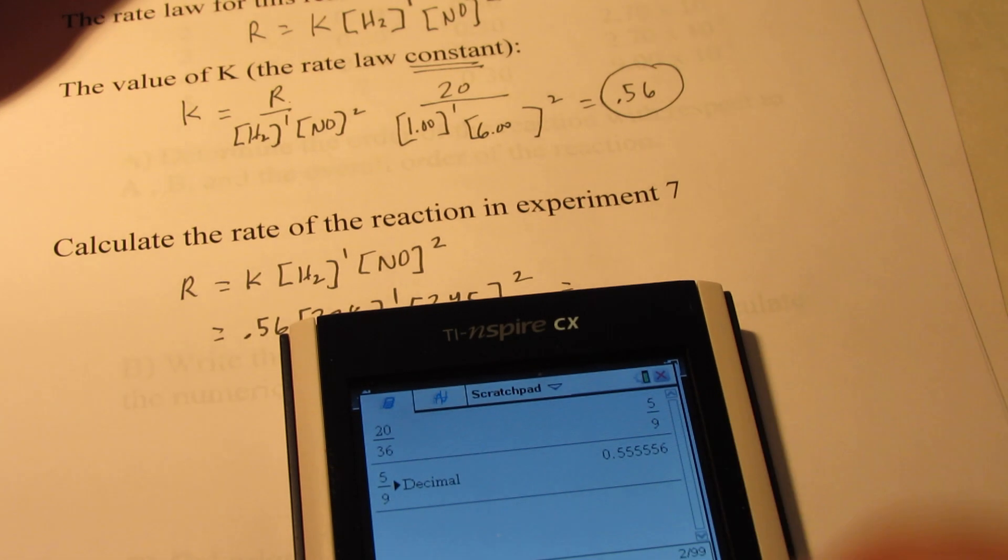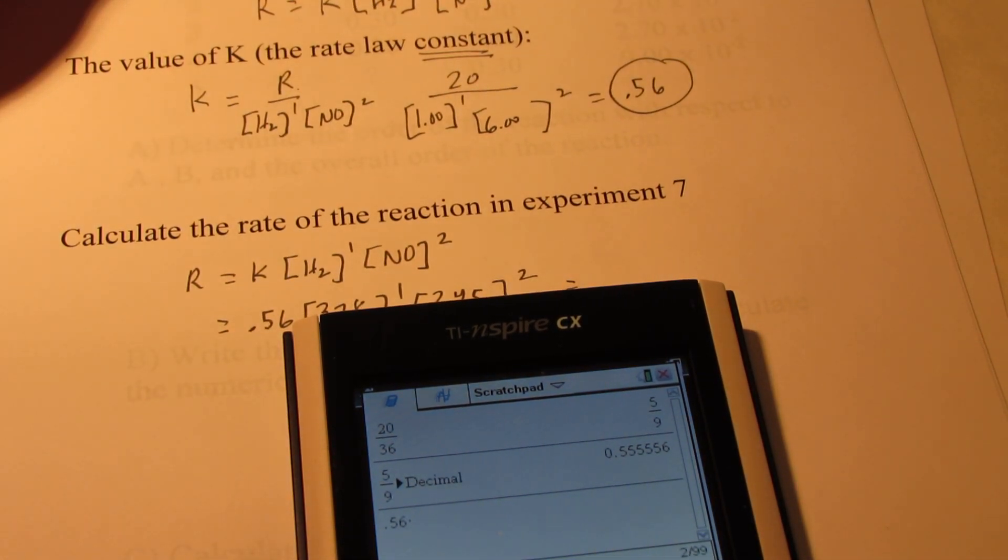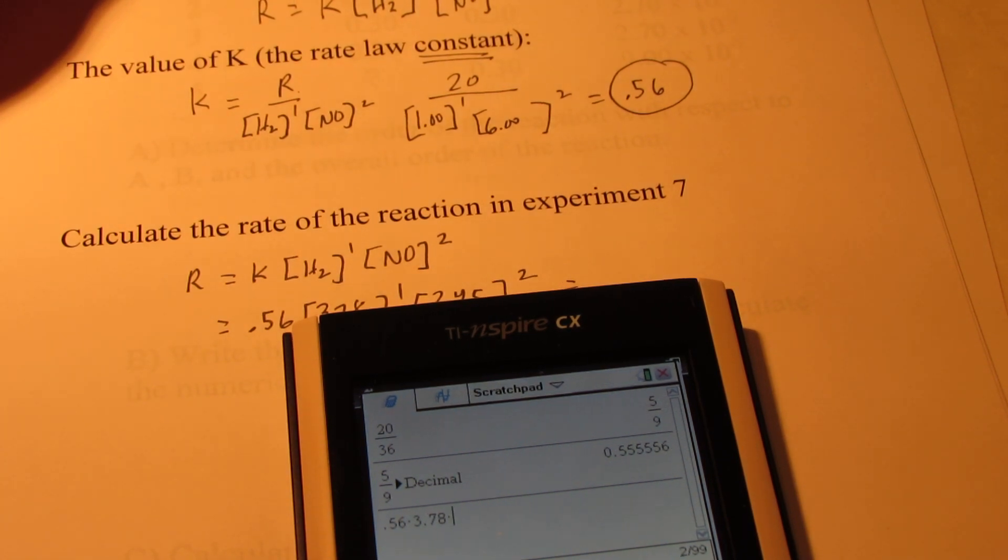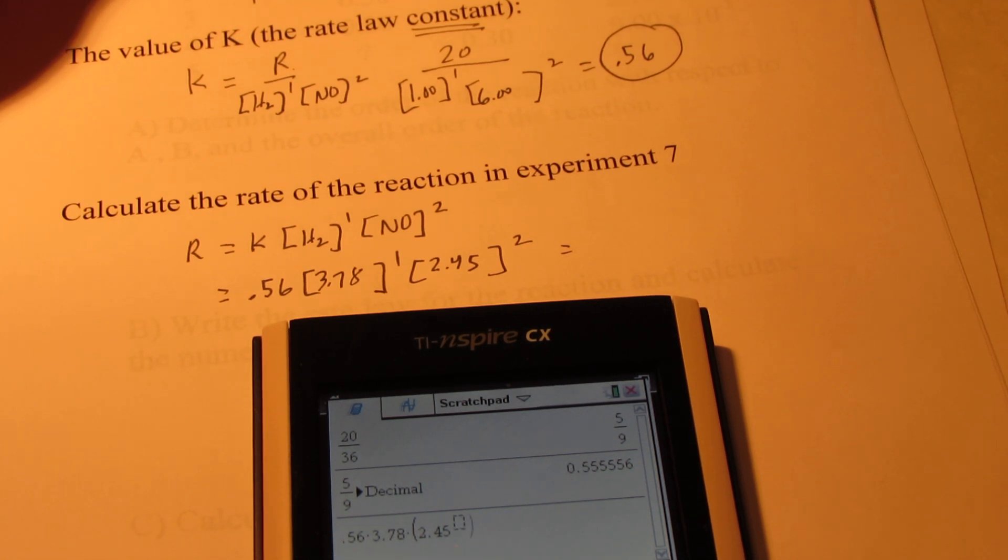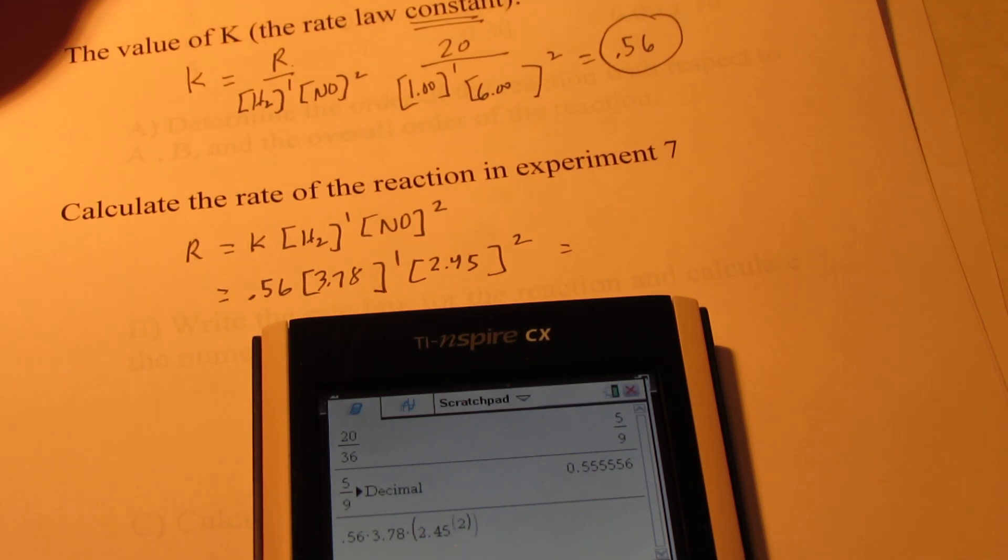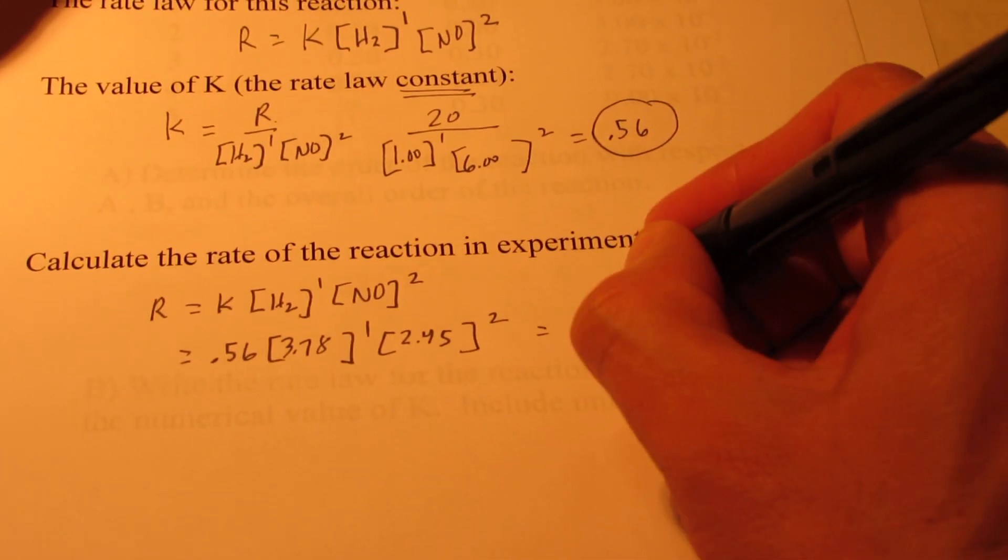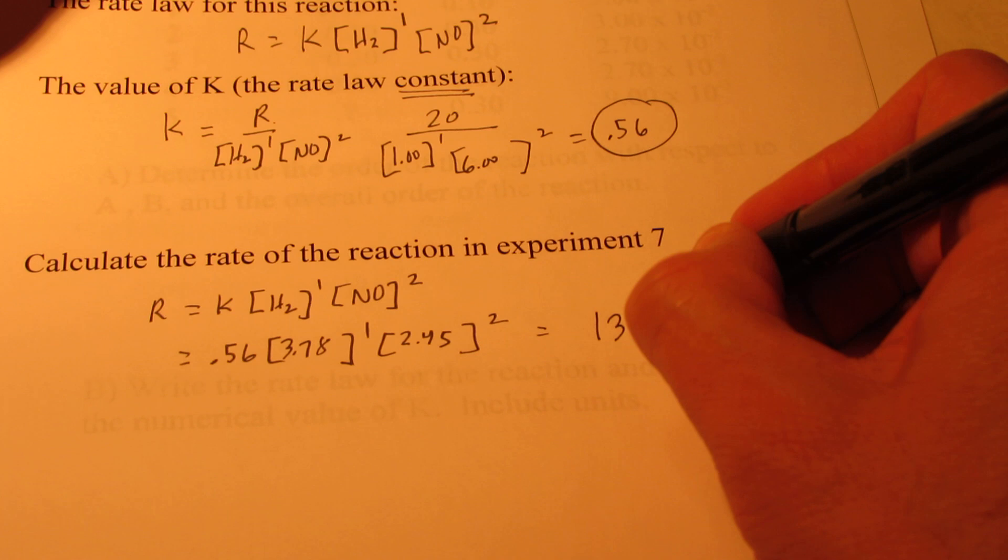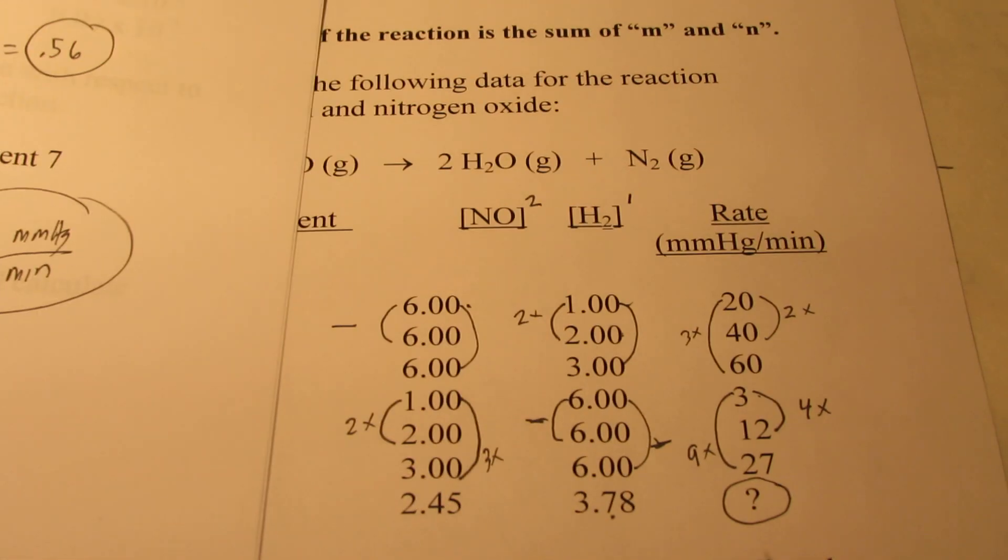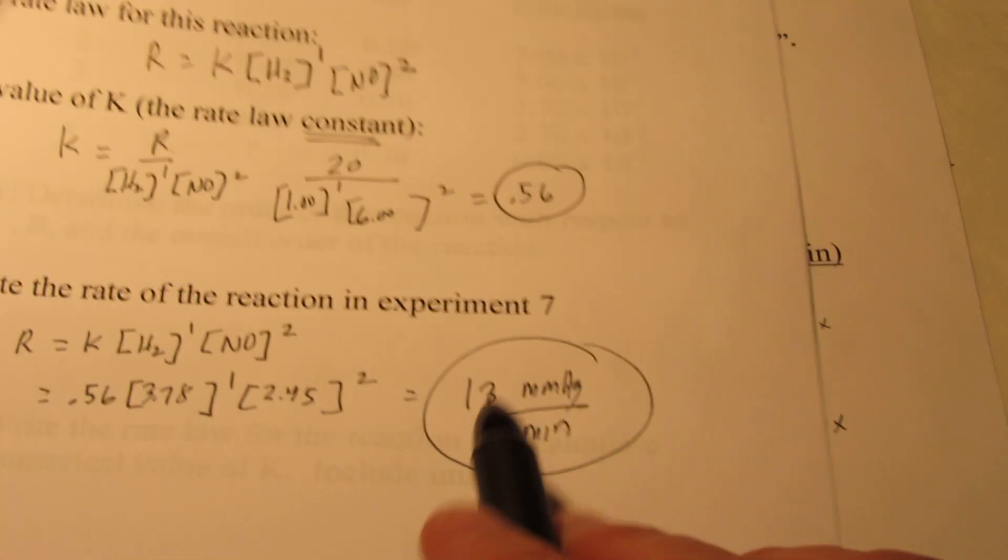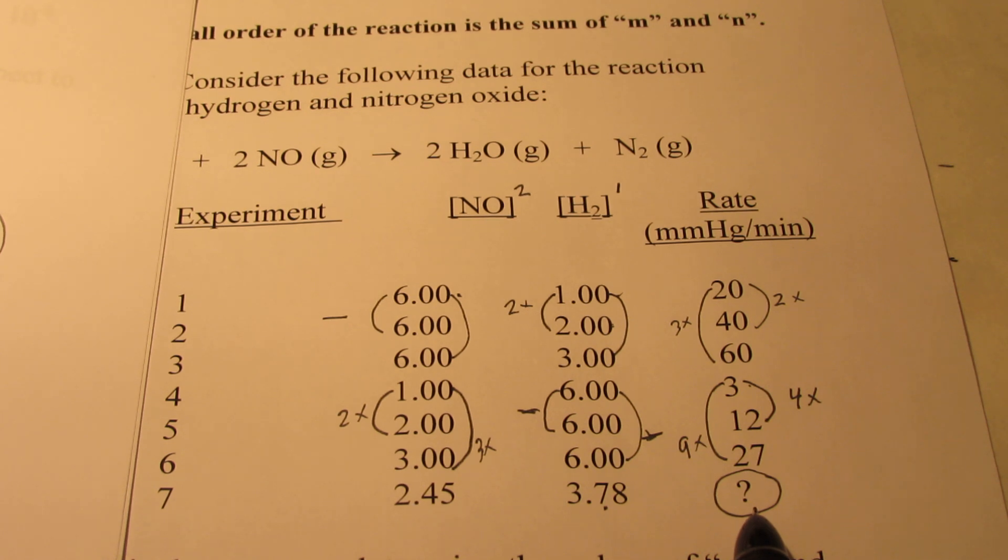So let's see what our rate would be. 0.56 times 3.78 times, I'm going to use my parentheses key here, 2.45, and then my caret key squared, close off my parentheses, enter, I get 12.7. We probably should round that to 13, and that would be millimeters of mercury per minute. So the rate in this experiment where there's a question mark, I would expect to be about 13 millimeters of mercury of pressure change every minute.